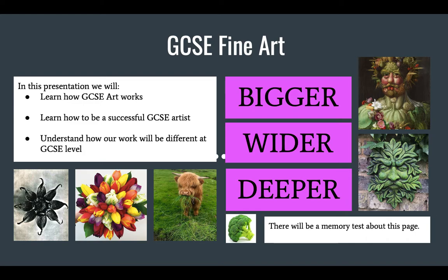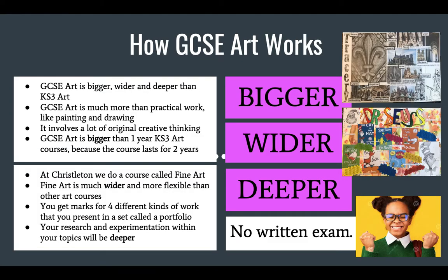One of the first things to say is that topics are much more in depth, bigger, deeper and wider at GCSE than they are at Key Stage 3. Taking the images on this slide as an example, if we were studying natural forms at Key Stage 3 we might study flowering plants, fruits and vegetables, or animals, and look at certain kinds of artwork made using natural forms. But at GCSE you have to combine many of these kinds of inspiration all at once. GCSE art is bigger, wider and deeper than Key Stage 3 art.